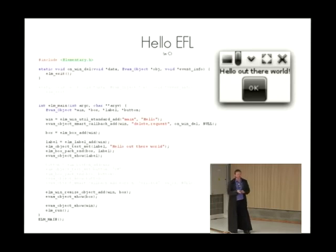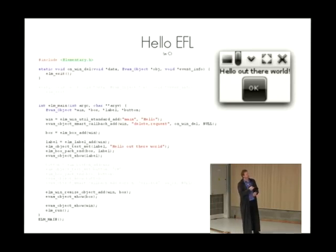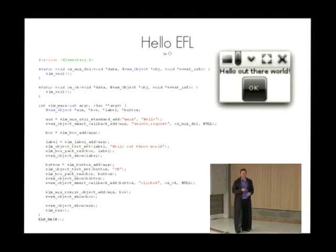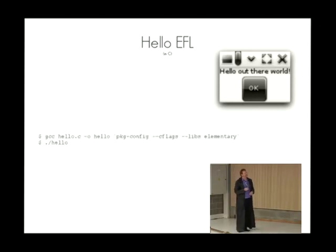To handle your window being deleted, just add a callback to handle a delete request — on request to delete, just exit. Really, really easy. To fill the window with something, just create a box, put a label in it saying 'hello world', pack it at the end of the box, and show it. For a button, create button, set text, pack it at the end, show it, and if you click the object call the 'on okay' function, which just exits. That's as easy as it gets. Compiling is also very easy.